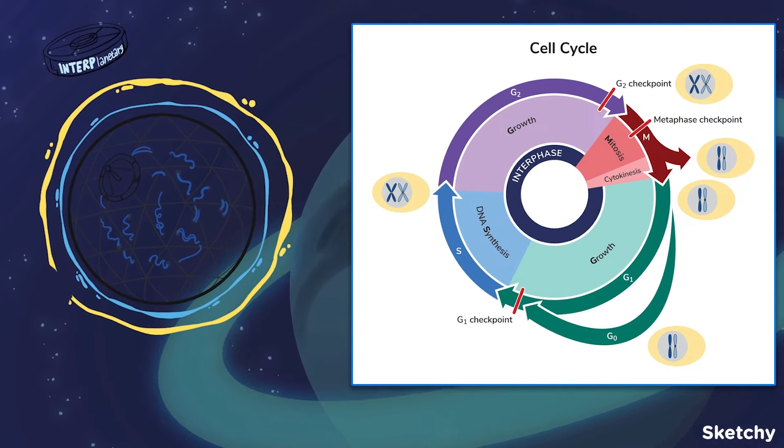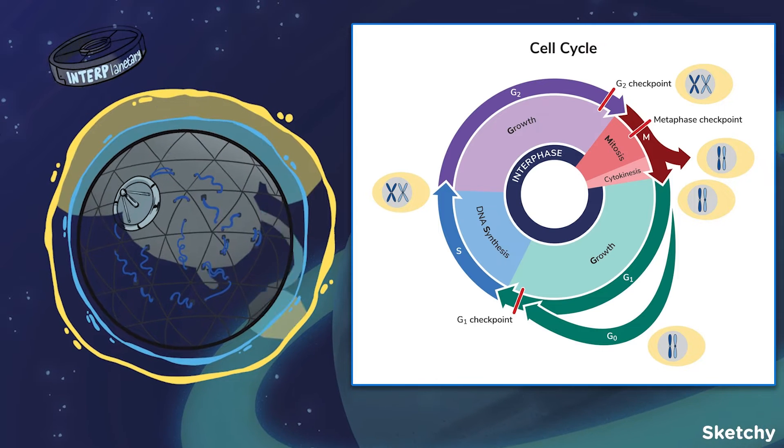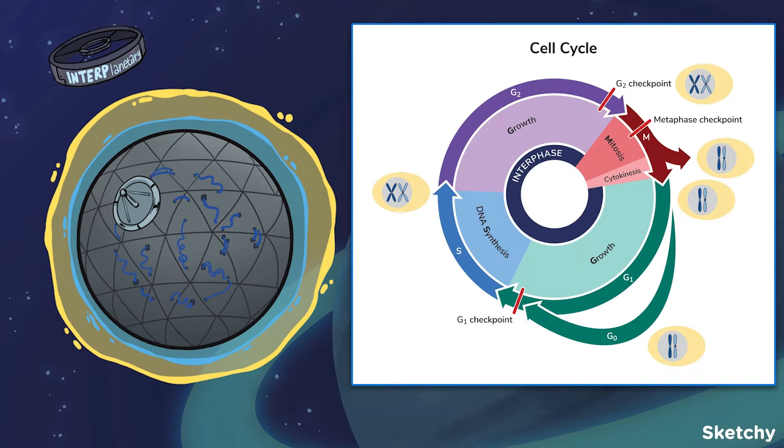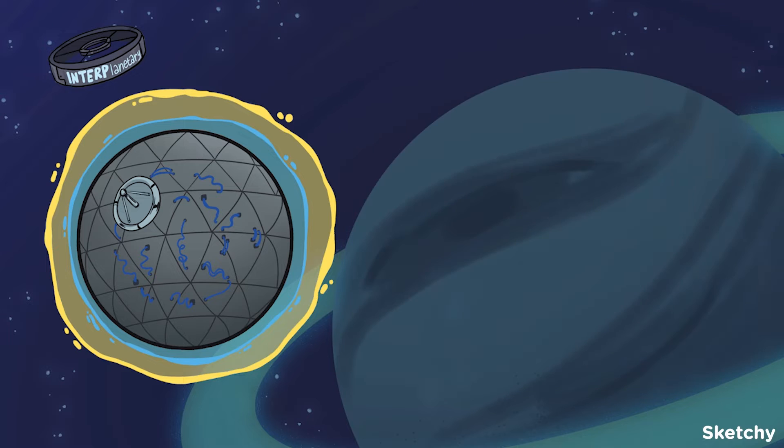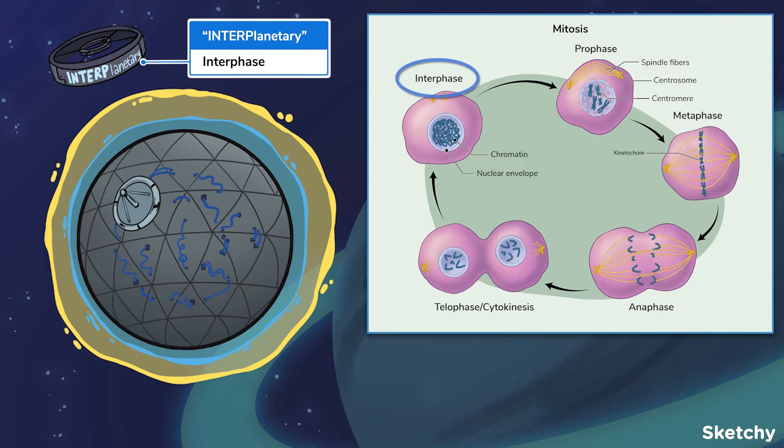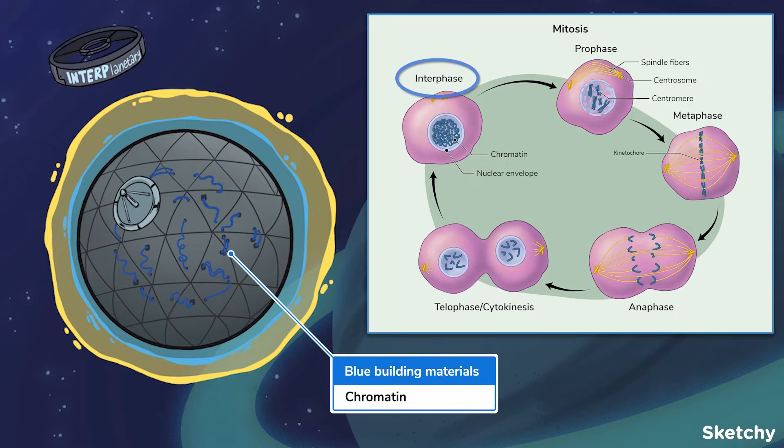The cell cycle has two main parts: interphase and the mitotic phase, consisting of mitosis and cytokinesis. Remember that the cell grows in size and generates a copy of its DNA during interphase. Another finding is that chromatin is loosely packed to permit transcription of genes. To show that, we drew some loosely arranged building materials.